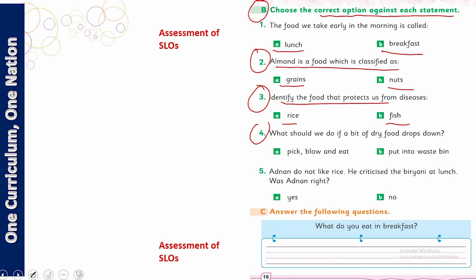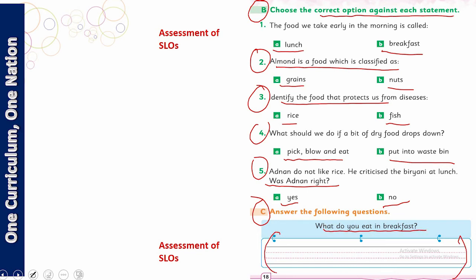What should we do if a bit of dry food drops down? Humein us ko kya karna chahiye — pehla option theek hai, doosra option theek hai? And the fifth question: someone did not like rice and criticized the biryani at lunch — was that done right? Wo sahi tha ya galat tha — bar bar apne khane ko criticize karna? And the last one is a very beautiful question: what do you eat for breakfast? Aap sab ne alag alag cheezein likhni hain.